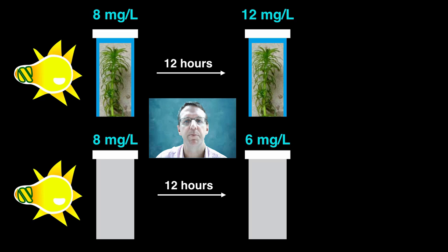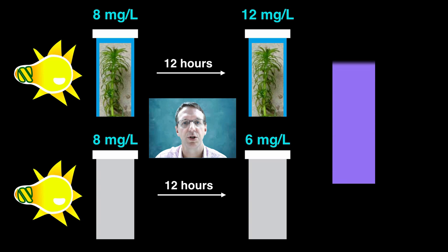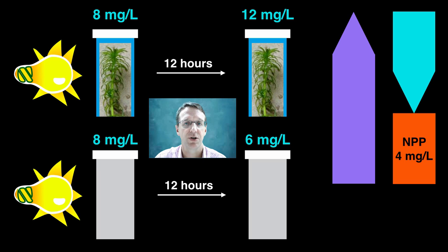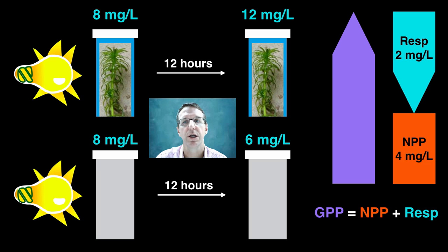So what does this mean in terms of GPP and NPP? Well, the increase in dissolved oxygen in the uncovered bottle represents the oxygen produced by photosynthesis minus the oxygen used by respiration, which, when you think about it, is a measure of the NPP. And in this case, that's 4 milligrams per liter. Meanwhile, the decrease of DO in the covered bottle represents the oxygen consumed by the plant during respiration. And from our previous knowledge that GPP is simply NPP plus respiration, we can determine that this Elodea plant has a GPP of approximately 6 milligrams per liter of oxygen per 12-hour period.